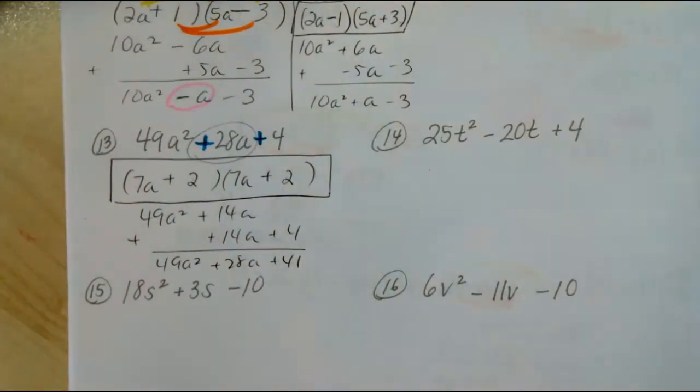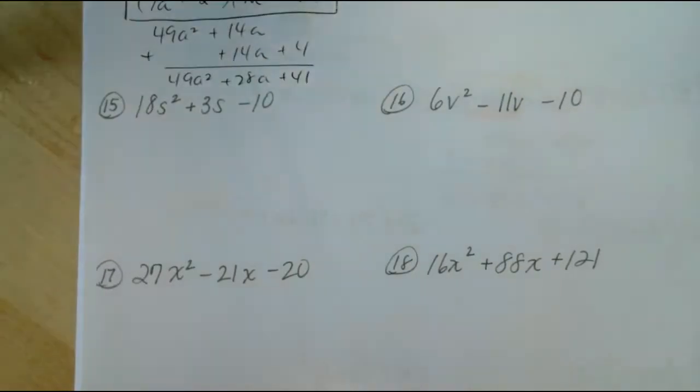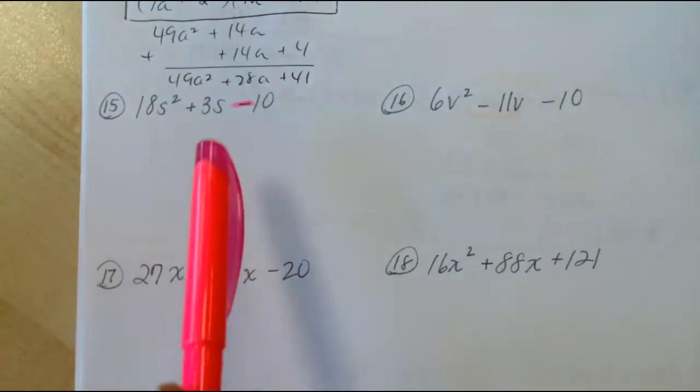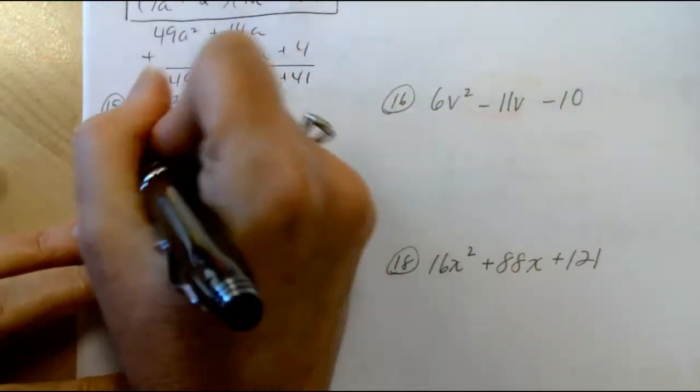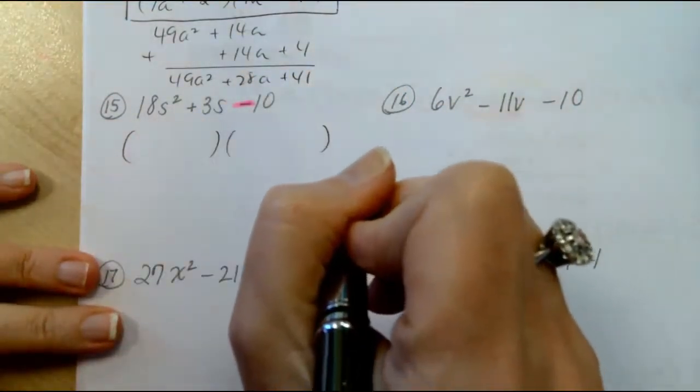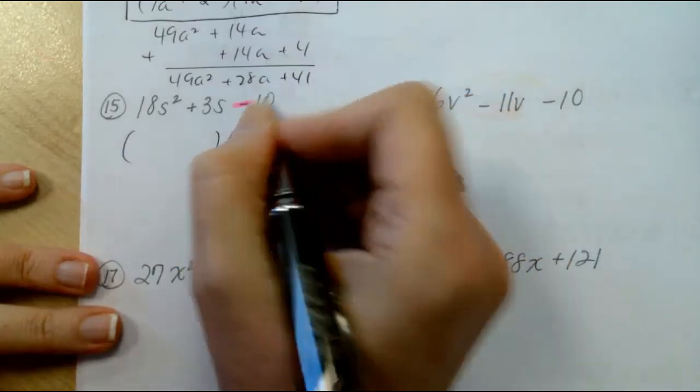Let's move on to number 15. Number 15 is 18s squared plus 3s minus 10. Once again, we've got a minus right there, and any time that last sign is a minus, the signs are going to alternate. But this time, we won't put in the signs first. Let's talk about the numbers first.